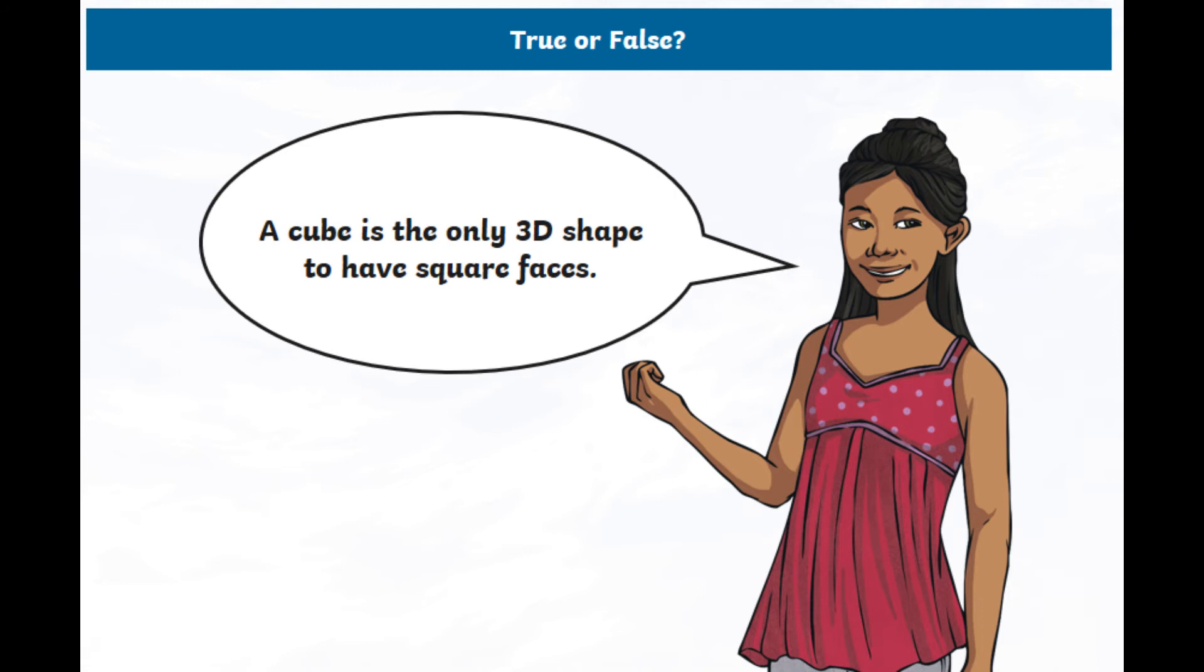Right, how about this true or false, then? So a cube, picture a cube in your mind, visualize it, is the only 3D shape to have square faces. Is that true or false? If it's true, prove it. If it's false, prove it. How do you know? Certainly need you to do more than just guess one or the other. Pause the video, decide what you think, have a reason ready, and then I'm going to move on to my reason.